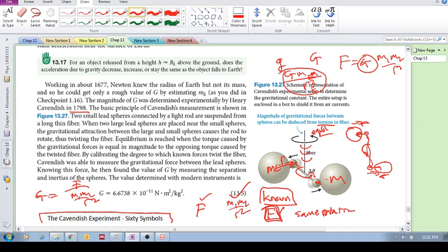So he was able to solve for G, and apparently he was able to get within 1% of what it is today. This was over 200 years ago, very impressive. So he was able to get within 1% of the number that we have today.